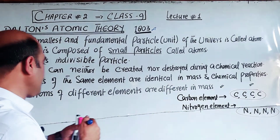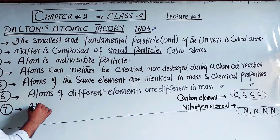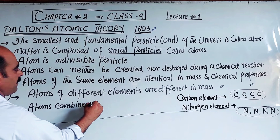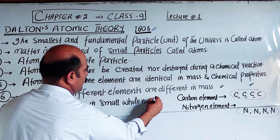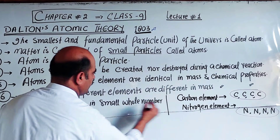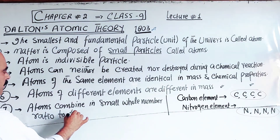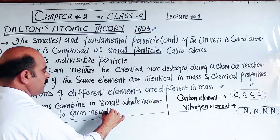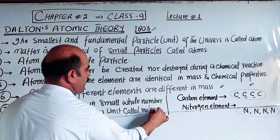Point Number Seven: Atoms combine with each other in small whole number ratios to form a new unit called a molecule. Atoms combine in small whole number ratios to form molecules.